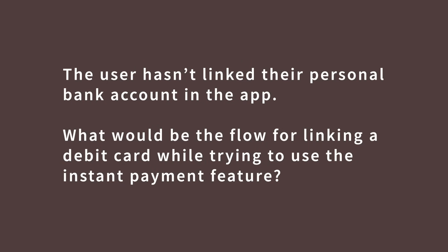Now it's your time to practice. Get a piece of paper and a pen — we're going to keep using the instant payment feature example, except we're going to add a new user flow. The user hasn't yet linked their personal bank account to the app. What would be the flow for linking their debit card while trying to use the instant payment feature? Feel free to pause the video now and sketch out the flow and the low-fidelity screens that correlate to this scenario.